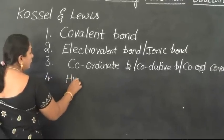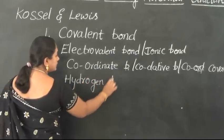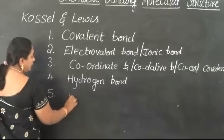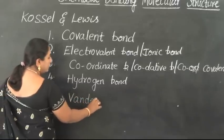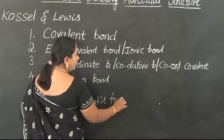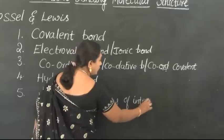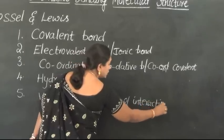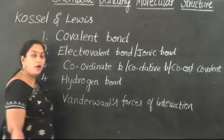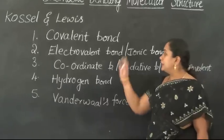The next type of bond formation observed among elements is the hydrogen bond. And last but not the least, van der Waals forces of attraction — also called van der Waals forces of interaction. These are some of the important types of bonds formed by the various elements present in the periodic table.